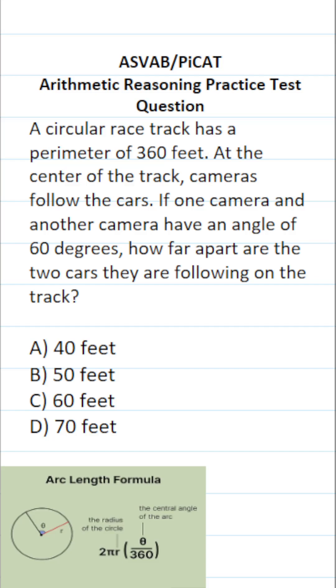This arithmetic reasoning practice test question for the ASVAB and PICAT says: A circular racetrack has a perimeter of 360 feet. At the center of the track, cameras follow the cars. If one camera and another camera have an angle of 60 degrees, how far apart are the two cars they are following on the track?